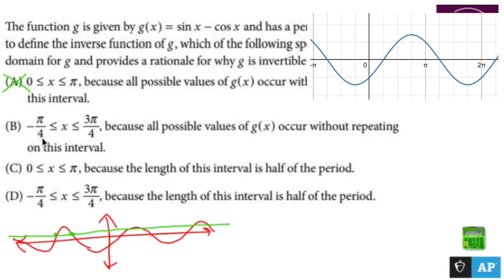Between negative π over four and three π over four, it passes the horizontal line test. Hooray. So let's just kind of hold on to this. C has the same first part as A, so C is no good.